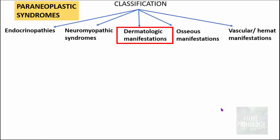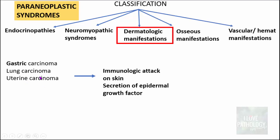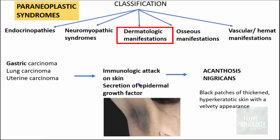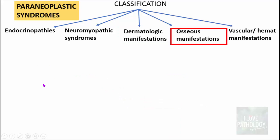For dermatologic manifestations, carcinomas of the stomach, lung, and uterus can cause immunologic attack on the skin or secretion of epidermal growth factor, resulting in acanthosis nigricans — black patches of thickened hyperkeratotic skin with a velvety appearance, typically found in flexural areas. Acanthosis nigricans can be the first manifestation of underlying cancers such as gastric carcinoma, lung carcinoma, and uterine carcinomas.